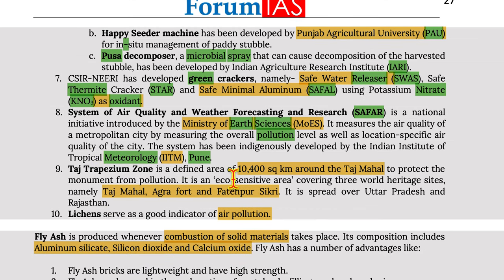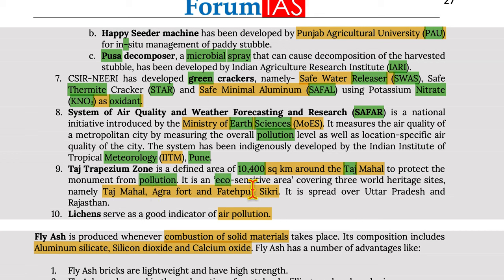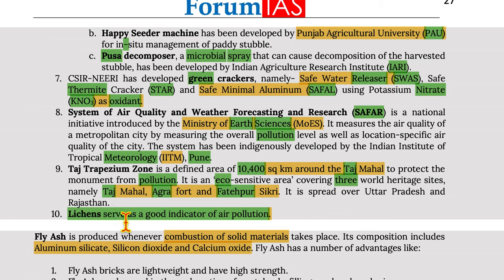The Taj Trapezium Zone is defined as an area of 10,400 square kilometers around the Taj Mahal to protect the monument from pollution. It is an eco-sensitive area covering three world heritage sites: Taj Mahal, Agra Fort, and Fatehpur Sikri, spread over Uttar Pradesh and Rajasthan. Lichen serves as a good indicator of air pollution.